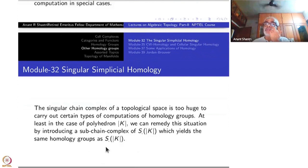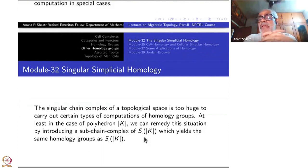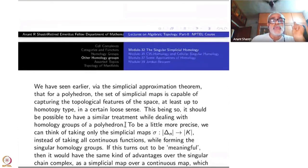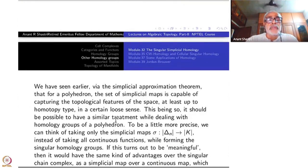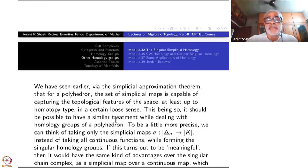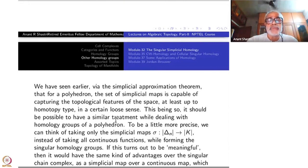When you go to homology, they will be the same — canonically isomorphic. There is an inclusion map, and when you pass to homology, the inclusion induces an isomorphism. We have seen earlier the simplicial approximation theorem: for a polyhedron |K| where K is a simplicial complex, the set of simplicial maps is capable of capturing topological features of the space at least up to homotopy type. The simplicial approximation theorem says that any continuous map can be replaced by a simplicial map up to homotopy. So it should be possible to have a similar treatment while dealing with homology also.